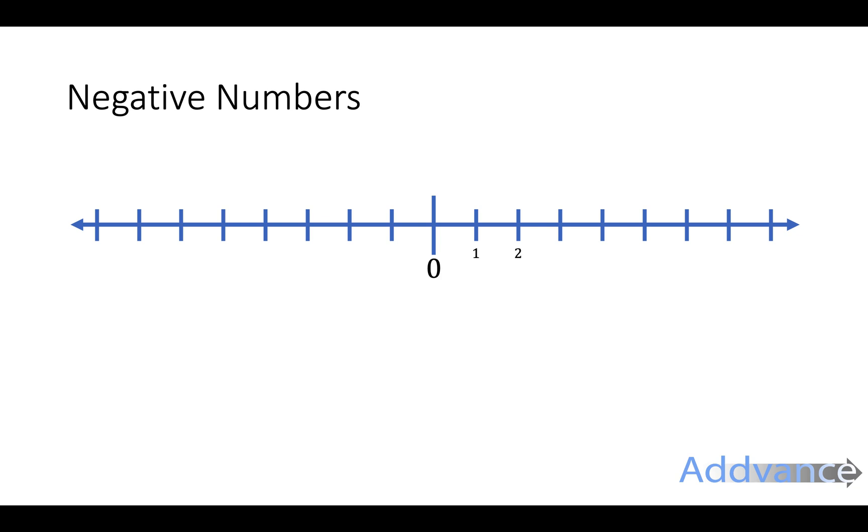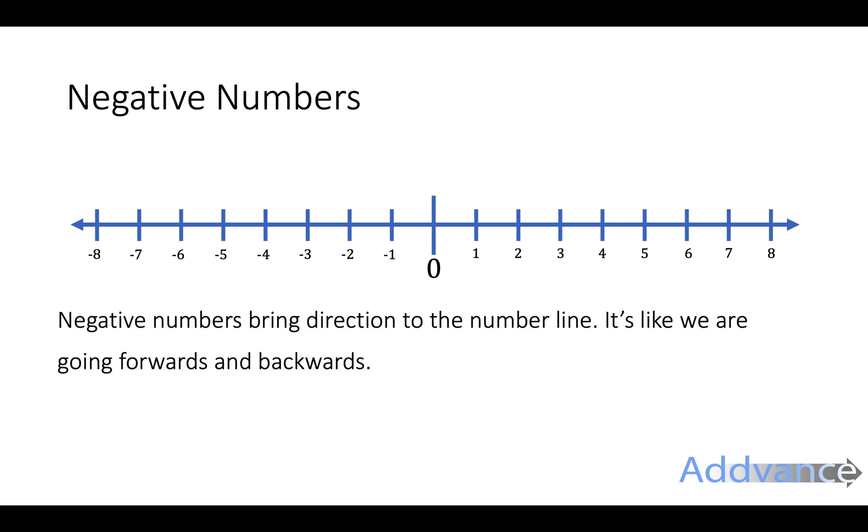On a number line it looks like this. We've got the positive numbers going one way and the negative numbers going the other way. Negative numbers bring direction to the number line and it's like the positive numbers are going forwards and the negative numbers are going backwards.